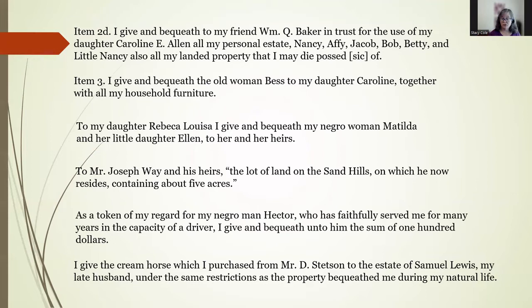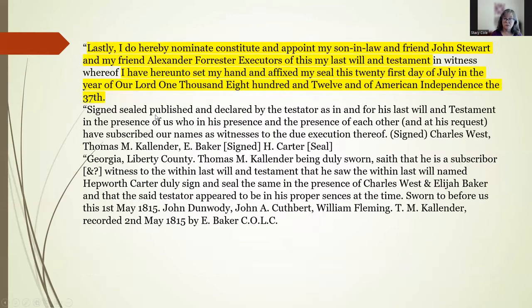You can see from these examples that the bequests are the part of a will most likely not to use boilerplate language. However, notice the use of the phrase 'give and bequeath' in many of them — very standard. If you know it's a common phrase, you can read it no matter what the handwriting. This part of the will is also the most useful for people researching their enslaved ancestors. Note that Matilda has a daughter named Ellen, and that Hector has been a driver — which was normally a supervisory position on a plantation, not literally a driver.